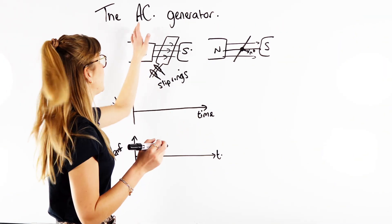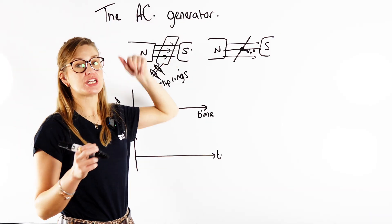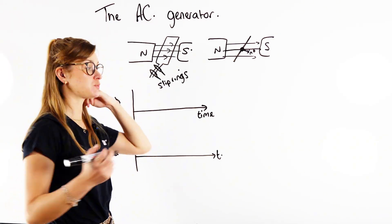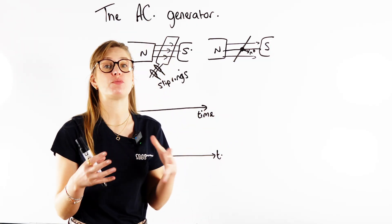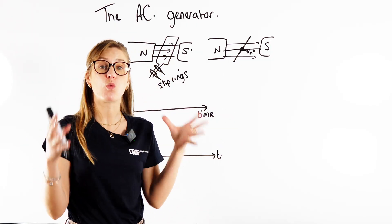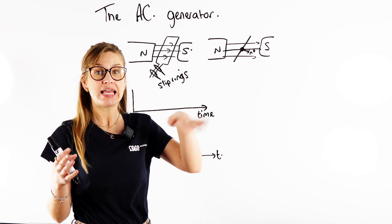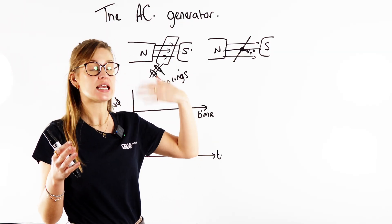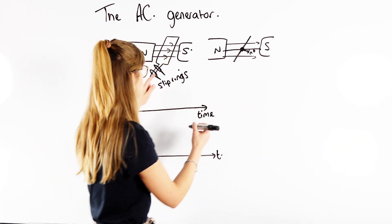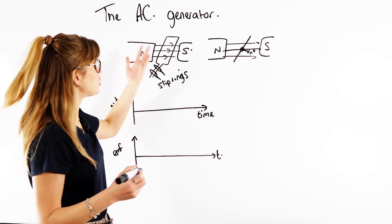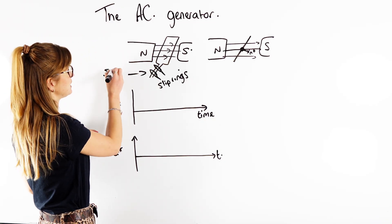In this video, we're going to go over the AC generator. AC stands for alternating current. Generators are found in our power stations, where we burn fossil fuels to heat up water. The water turns to steam, the steam turns a turbine, and that turbine causes motion — kinetic energy. That motion then causes a wire to spin, so we now have a spinning wire.